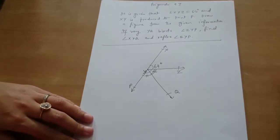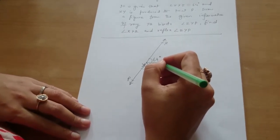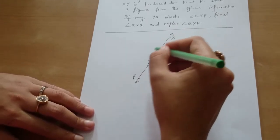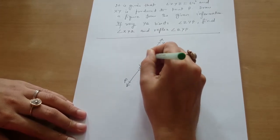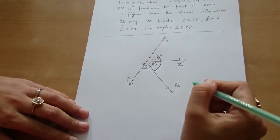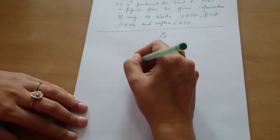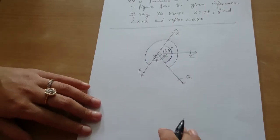Let us assume angle ZYP. We will mark it with different color. We have to find angle XYQ, that means this angle. And we have to find reflex angle QYP, that means this whole. This is the objective. Tell me how you will do it.